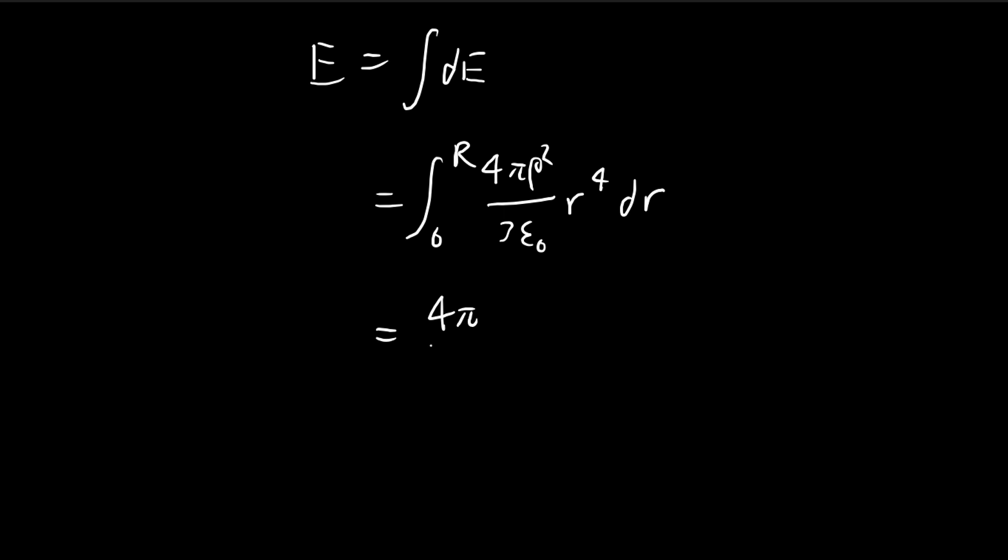So this is easily done, so r to the power of 5 divided by 5. And then I want to get rid of rho, and I want to express my answer in terms of the total amount of charge. So we can use this formula. So rho is actually equal to 3 q divided by 4 pi r to the power of 3.